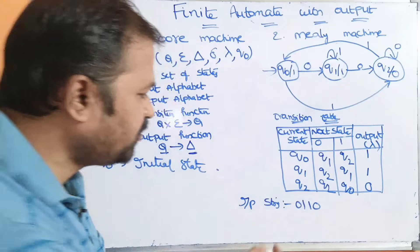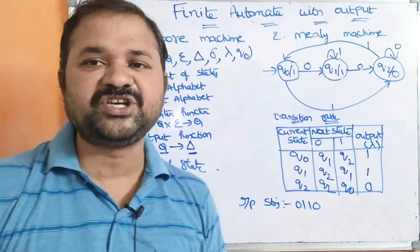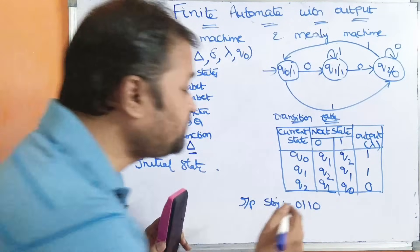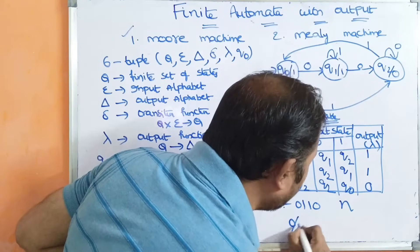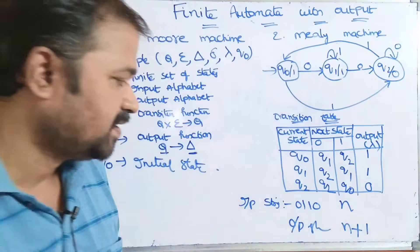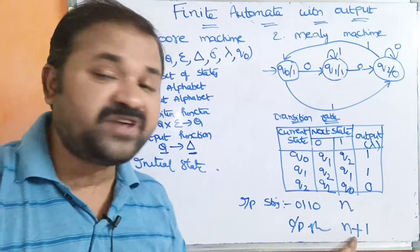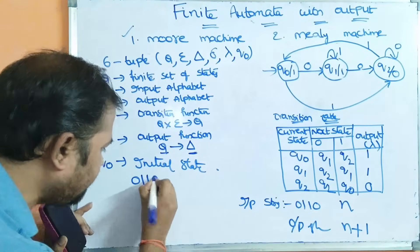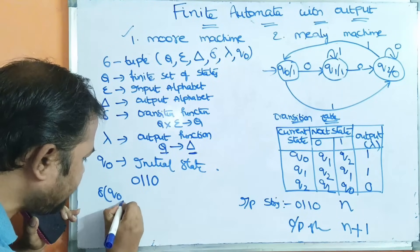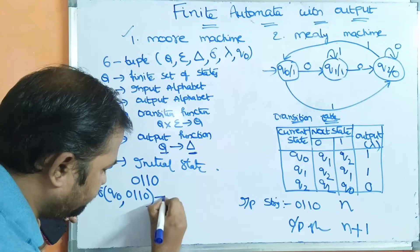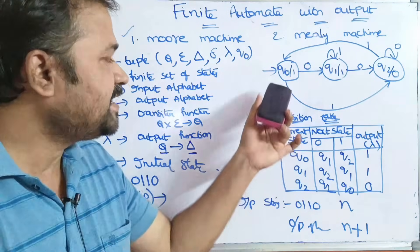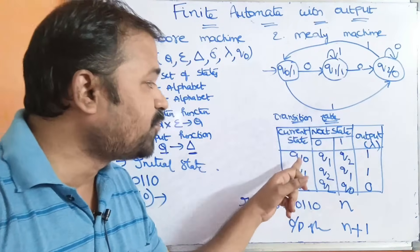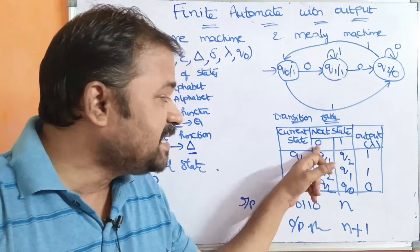Now let us see an input string. Let the input string be 0, 1, 1, 0. We have to generate the corresponding output string. In Moore machine, if the size of the input string is n, then the output string produces n plus 1. So the input string size is 4 and the output string size will become 5. Starting from Q-naught with input string 0, 1, 1, 0 — the output depends only on the current state, so initially epsilon is applied on Q-naught.